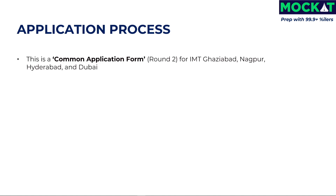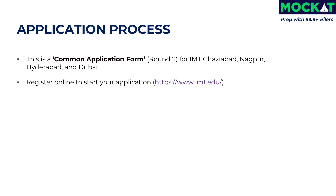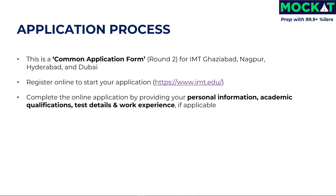Now let's look at the application process. This is the common application form for Round 2 for IMT Ghaziabad, IMT Nagpur, IMT Hyderabad, and IMT Dubai. During the application process, you can select your preferences among these colleges. To start your application, first you need to register at www.imt.edu. You should complete the online process by providing your personal information, academic qualification, test details, and work experience if applicable.